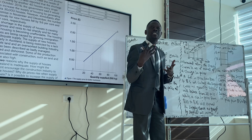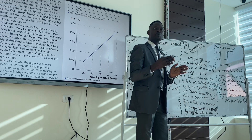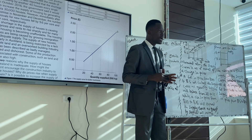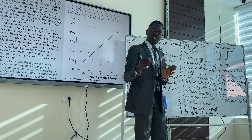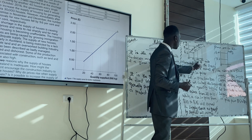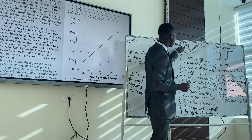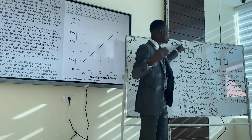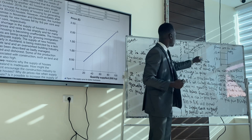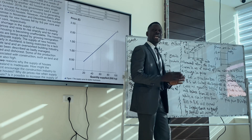On the other hand, if the price increases from $10 to $15, the quantity supplied is expected to increase. Based on the law of supply, the higher the price, the higher the quantity supplied. This is called an expansion.